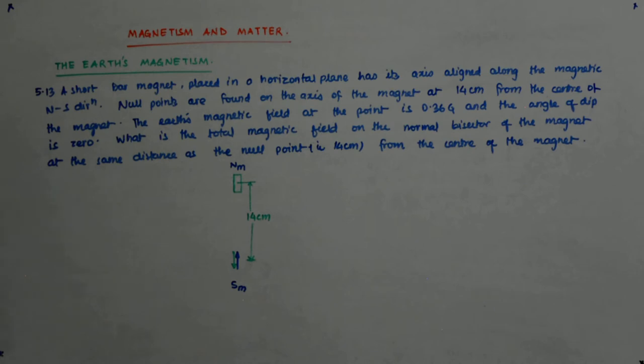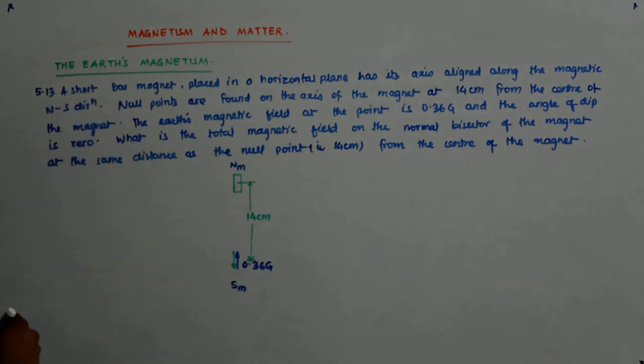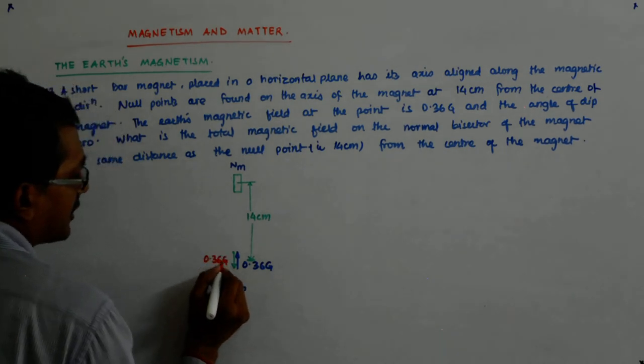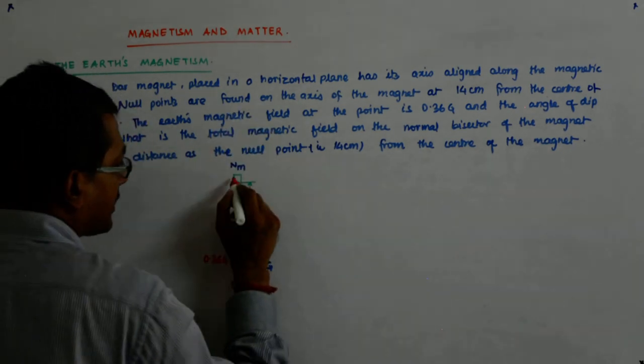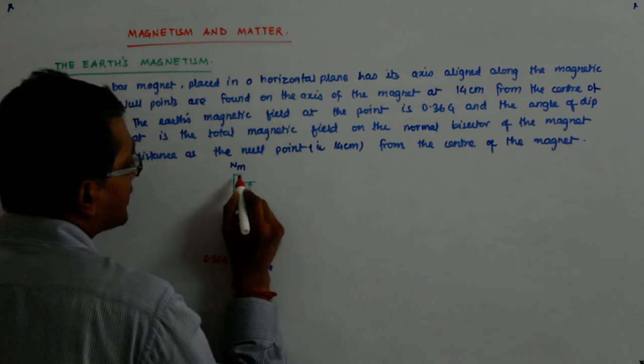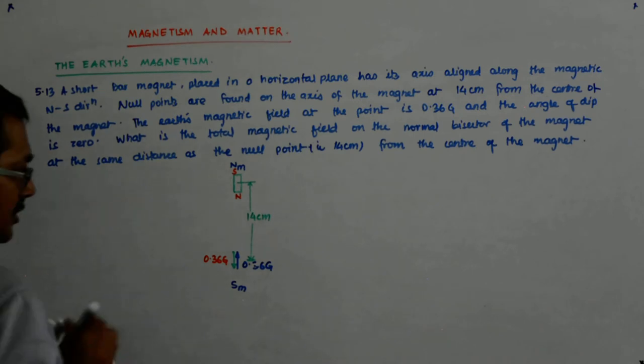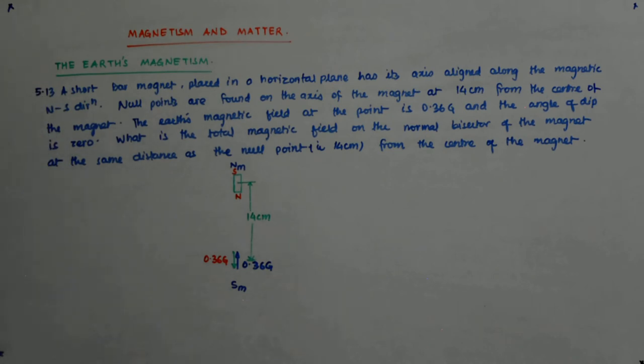It will form a null point only when, see the earth's magnetic field was 0.36 Gauss. Then the field due to the magnet should also be 0.36 Gauss in the opposite direction. For the magnetic field to be in this direction, its magnetic moment will also be in this direction. That means this is the north and this is the south pole of it. Do we get that? And this gets cancelled. So this is 0 out here.